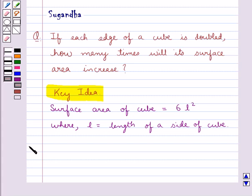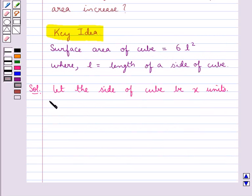Let's move on to the solution. Let the side of cube be X units. Then surface area of cube would be equal to 6X square.